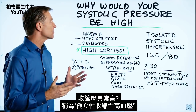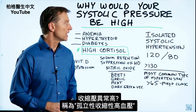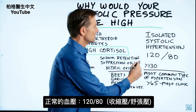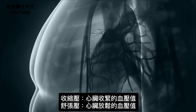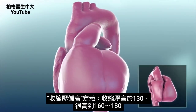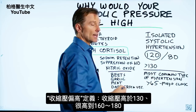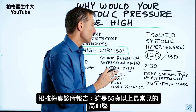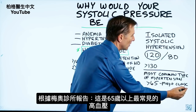Why would your systolic pressure be higher than your diastolic? There's a condition for that called isolated systolic hypertension. Normally, blood pressure is 120 over 80. The top number is the systolic, which is the measurement of the contraction of the heart, and the diastolic is the relaxation phase. This condition is defined as the top number going above 130, but sometimes you see it really high, like 160 or 180. This is the most common type of hypertension over the age of 65, reported by the Mayo Clinic.